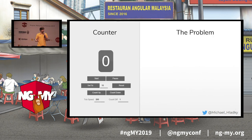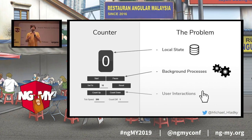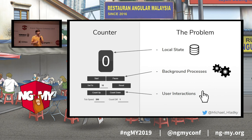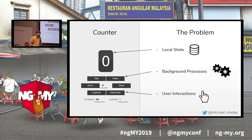What is the problem? The problem looks like this. We have a user interface. In this user interface, we have to manage some local state. We have some background processes and then we have a lot of options for user interactions — a lot of different buttons and input boxes.